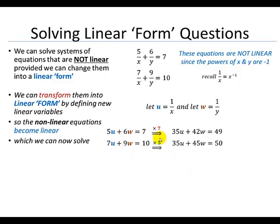By 5, sorry. So if I take 7 times 5u, that's 35u. 7 times 6w is 42w. And 7 times 7 is 49.